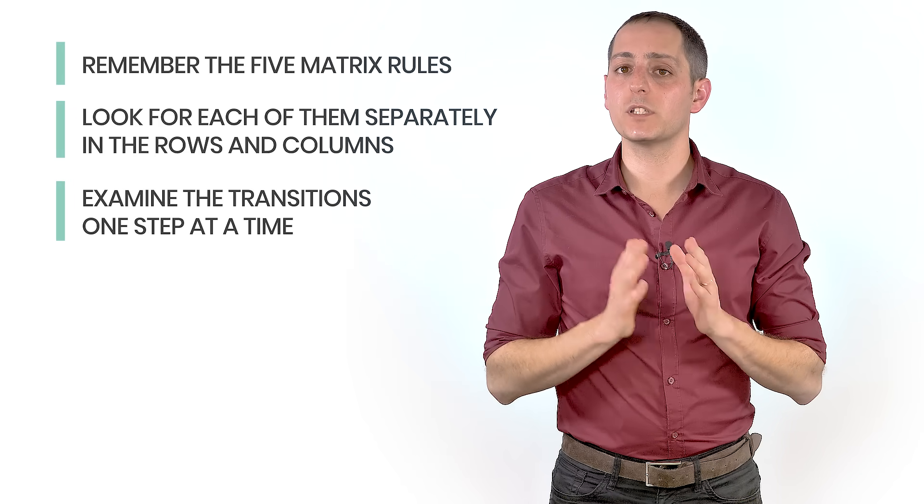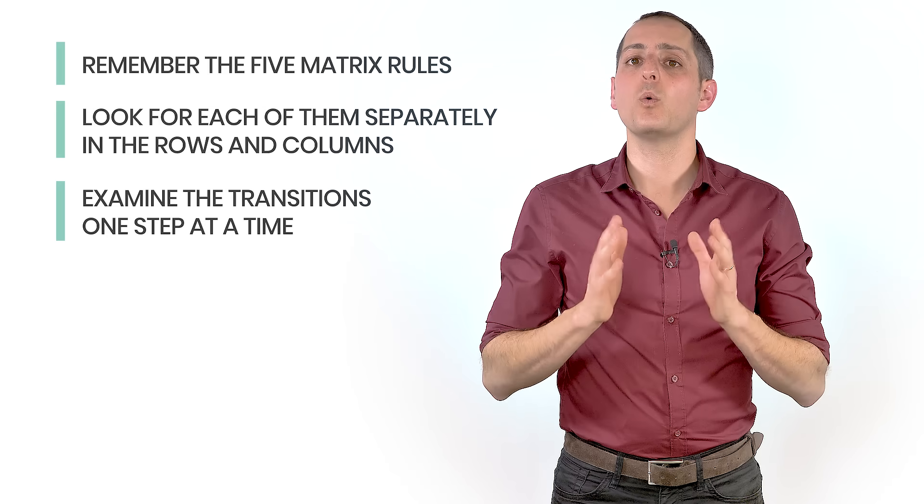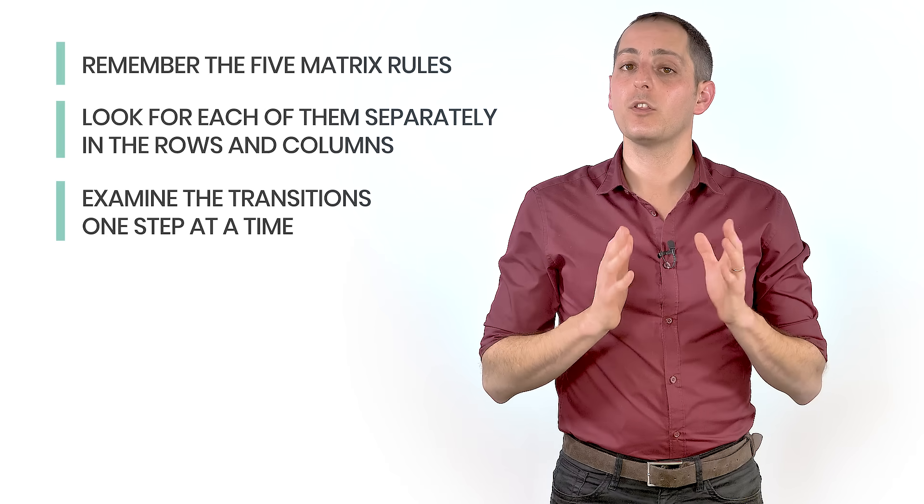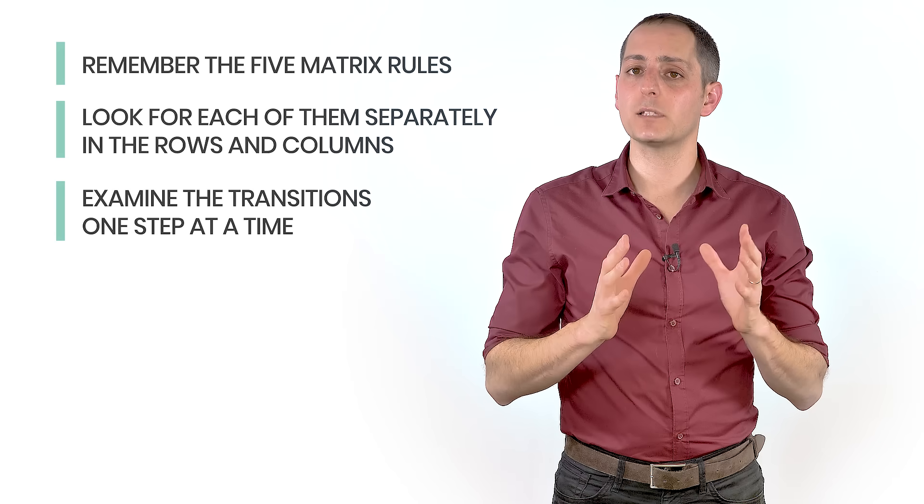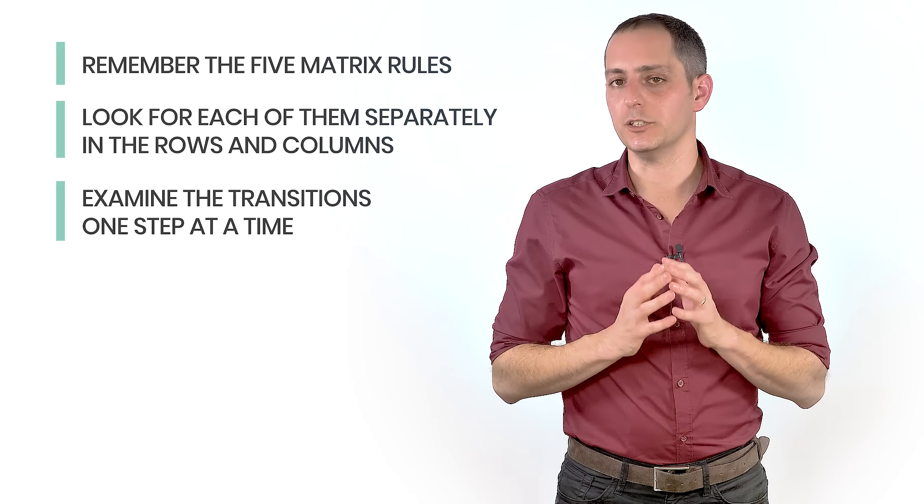This is quite an elaborate solution, but to simplify it, you should approach C-cat matrix questions with the following rules in mind. Remember the five matrix rules, look for each of them separately in the rows and columns, and examine the transitions one step at a time. This kind of process will allow you to dismantle the large problem into a set of smaller ones, making it easier to solve.